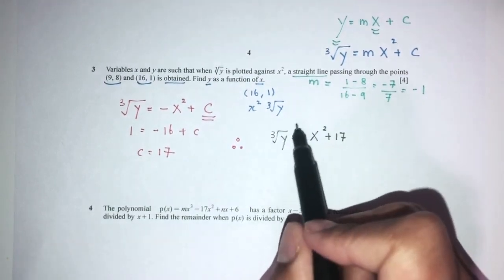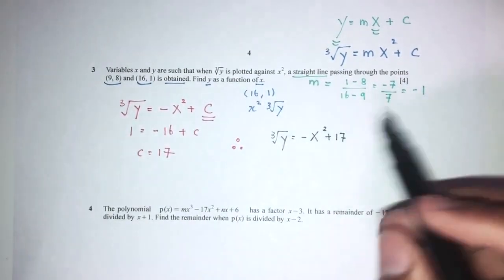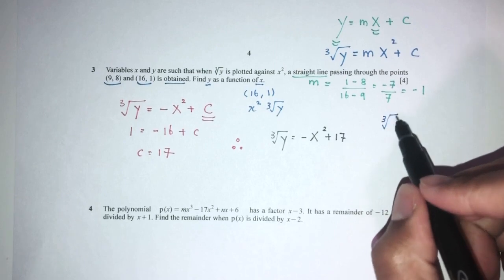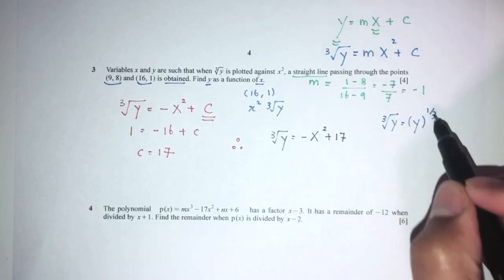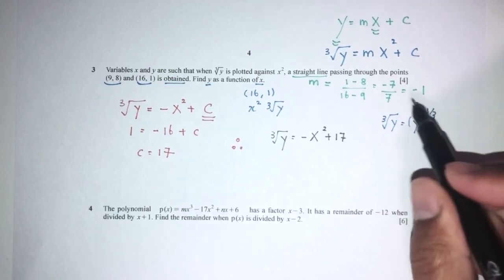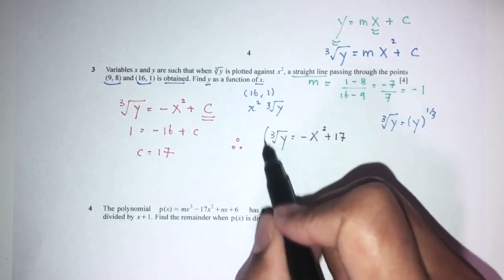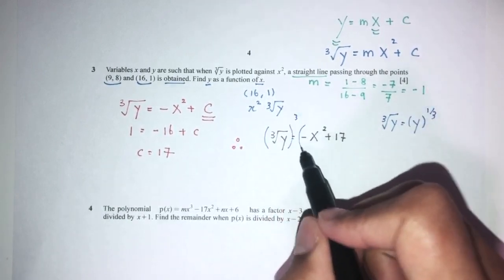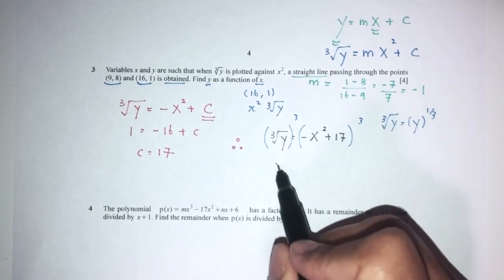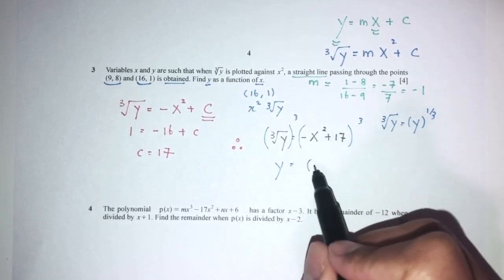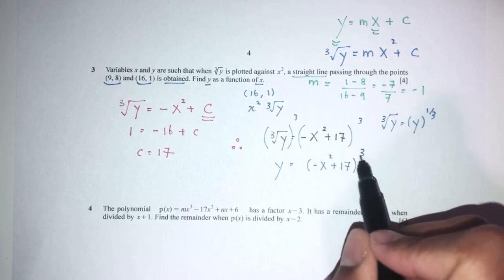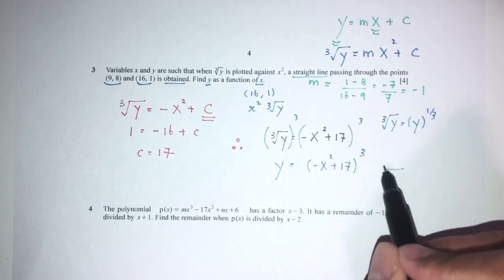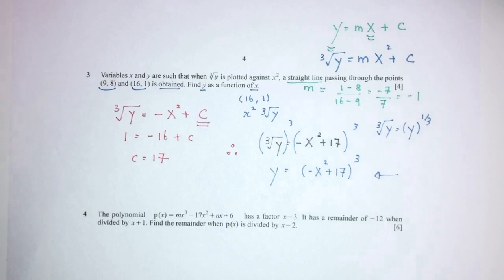To express y as a function of x: cube root of y is y to the power 1/3, so applying the power of 3 to both sides gives y equals (minus x squared plus 17) to the power 3. This is your answer for expressing y as a function of x.